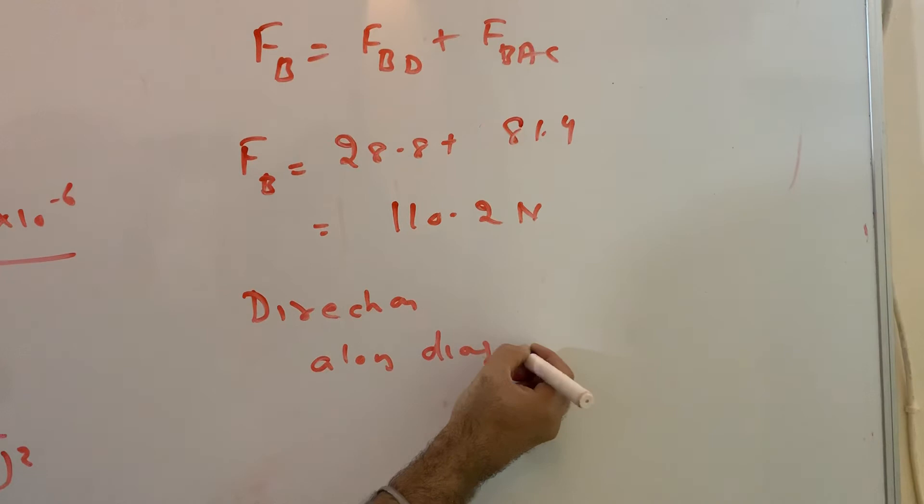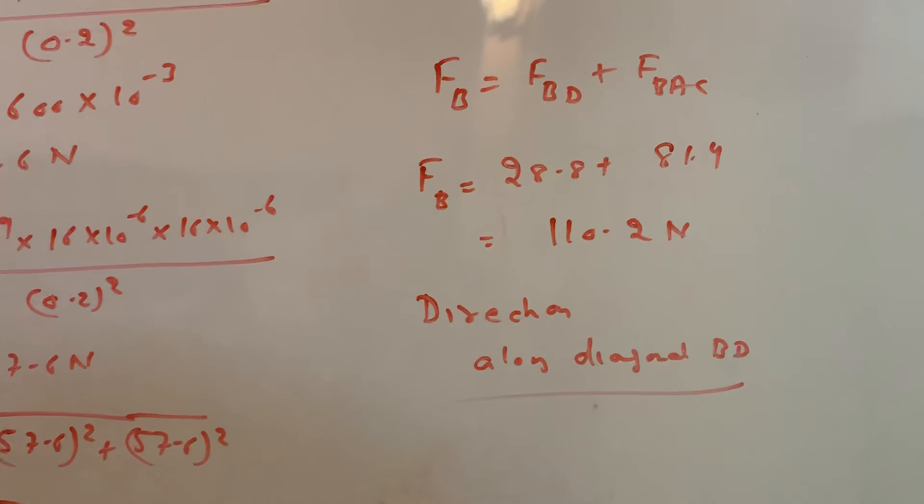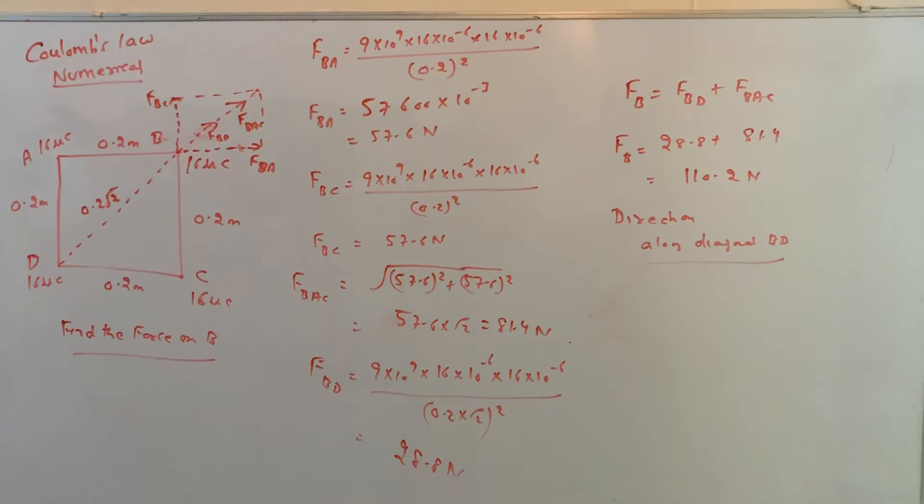Direction will be along diagonal BD. So please practice this question. There in the assignment plenty of questions are given to you, please solve it. So this either triangle or square will keep coming, so please keep solving this kind of questions. Thank you.